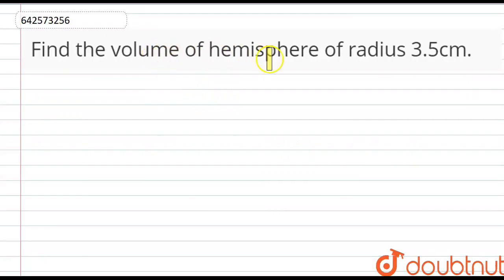Hello everyone. In this question, we are given a hemisphere of radius 3.5 cm and we have to find the volume of that. So, the radius of the hemisphere is 3.5 cm.